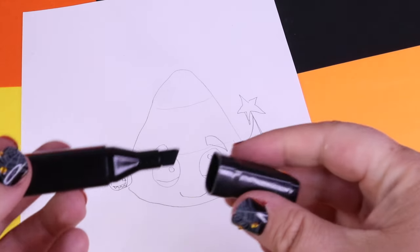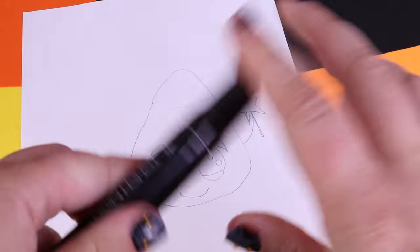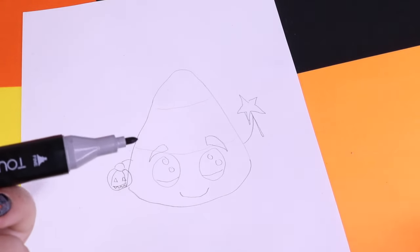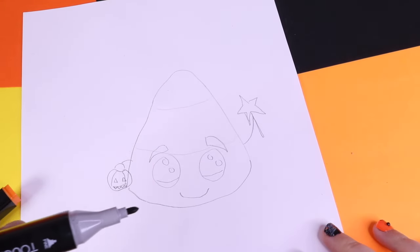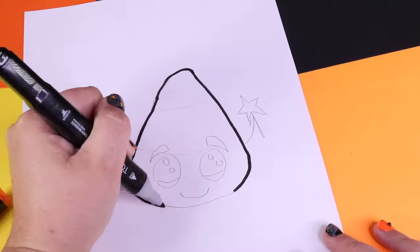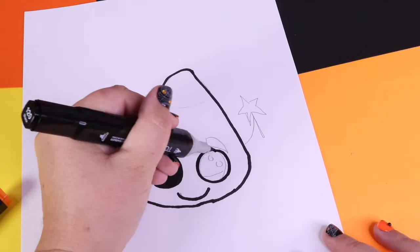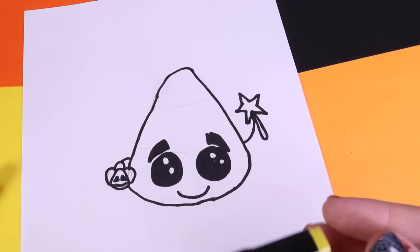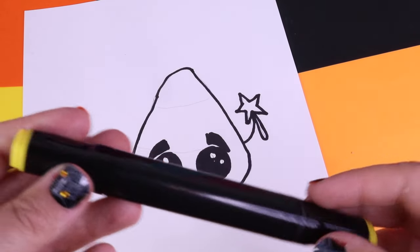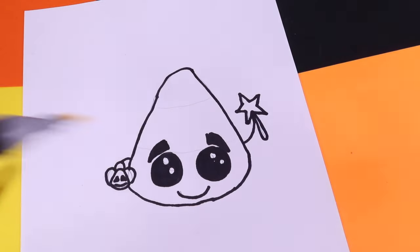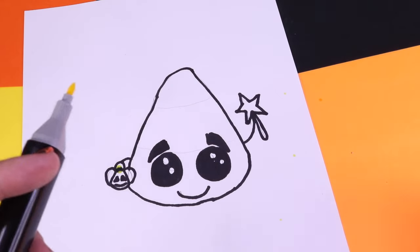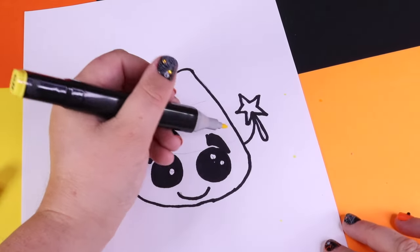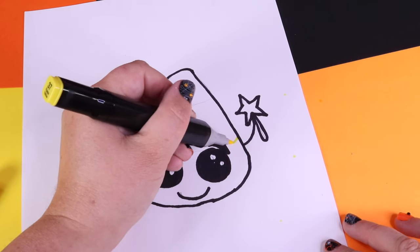Now let's take our black skinny marker and draw the lines for our candy corn. So far so good, but he looks a little ghostly. So we are going to go ahead and add our candy corn's colors.